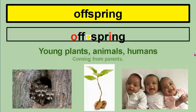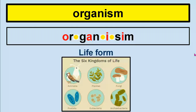Offspring — young plants, animals, and humans coming from parents. Organisms — those are our life forms. There are six major kingdoms of life.